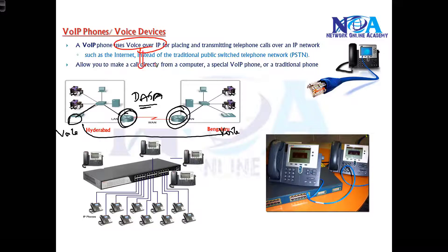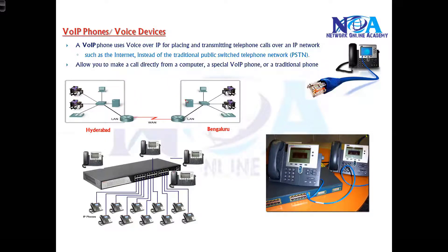Nowadays we use Facebook calling, WhatsApp calling — these all use the internet, not the telephone line. That is like public VoIP, where applications allow you to make a voice call over the existing internet. Similarly, within the company network, they use special dedicated devices called IP phones, and there are plenty of devices like CUCM required to manage this.